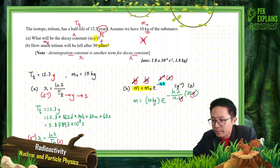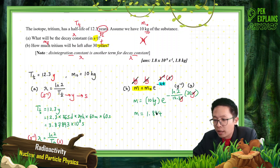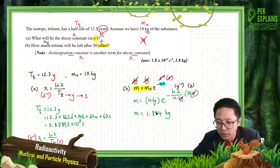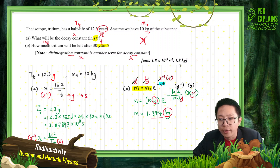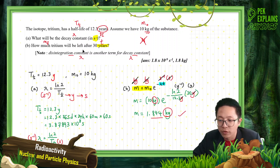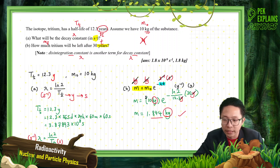Calculating with these values in years gives a final mass of approximately 1.844 kilograms — in kilograms because M₀ was in kilograms. The expected answer is 1.8 kg, so 1.844 kg is correct. This approach is flexible as long as lambda and time share the same time unit.